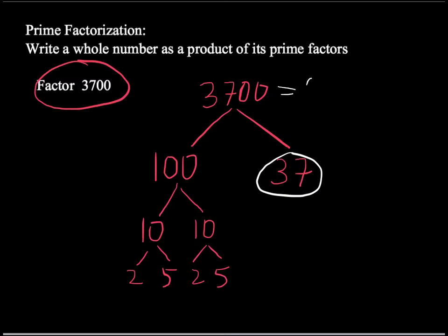So now I can write out my answer. 3,700 is equal to 2 times 2 times 5 times 5 times 37, or we can write it as 2 squared times 5 squared times 37.